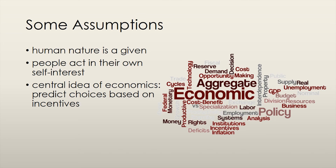Economists take human nature as given. We view people as acting in their own self-interest in order to gain the most benefit for themselves. How much benefit someone gains depends on their own preferences, but in general, people will try to maximize their benefit regardless of their preferences. The whole point of economics — or at least microeconomics — is to predict the self-interested choices that people make by looking at the incentives they face. We can do this because we assume that people undertake activities in which the marginal benefit exceeds the marginal cost, meaning the additional benefit from consuming an extra unit of a good is more than the opportunity cost of consuming that same additional unit.